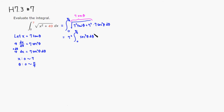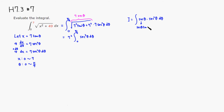Now I'll compute the integral of secant cubed on the side. Let I equal the integral of secant cubed theta. I write it as secant of theta times secant squared of theta dθ, then use integration by parts: take the derivative of secant of theta, and the anti-derivative of secant squared is tangent of theta.